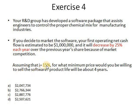Assume i=15%. You need to check whether the interest rate equals G or is different, so you know which equation to apply. The question asks for the minimum price you would be willing to sell the software, knowing the product life is 4 years. For geometric gradients, it is about knowing which equation to use and applying the numbers directly.